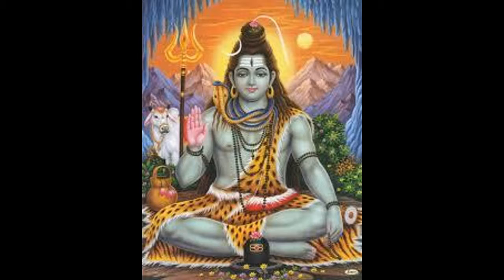Agnihotra is the prerequisite for doing all these Yajnas, and it is not an ordinary ritual. It has to be done daily, two times - once during sunrise and once during sunset. In one Agnihotra, a person has to worship three kinds of fire called Treta Agni. These three types of fire are: Garhapathya, Ahavaniya, and Dakshinagni. 'Namaste Garhapathyaya, Namaste Ahavaniyaya, Namaste Dakshinagini.'